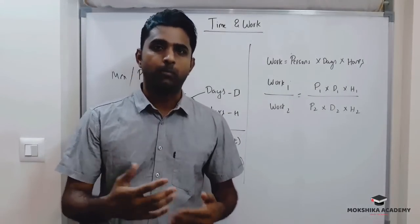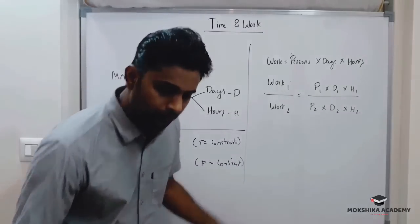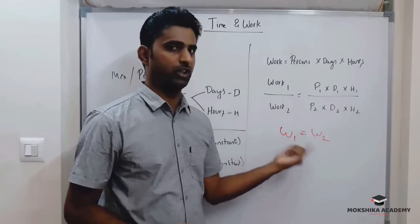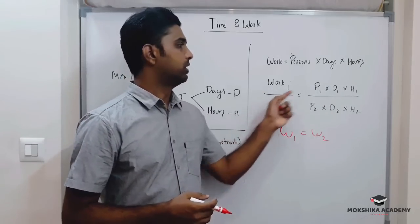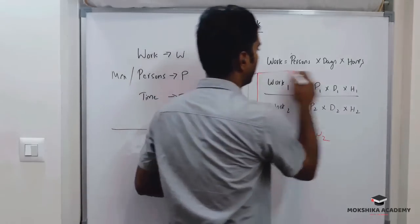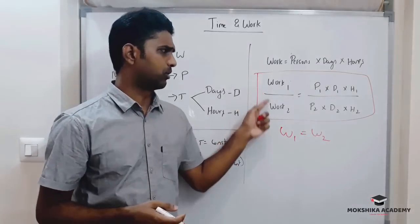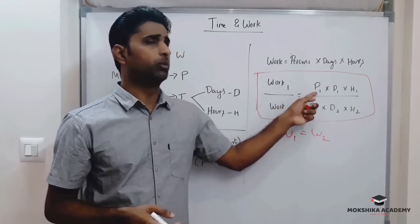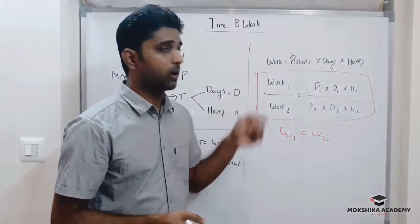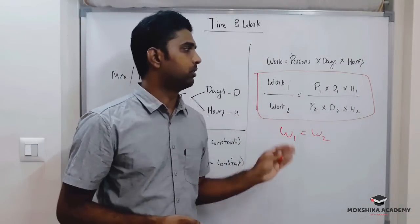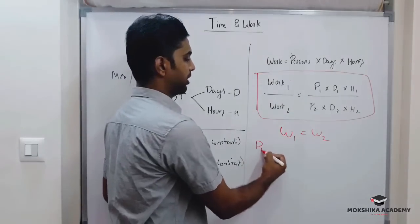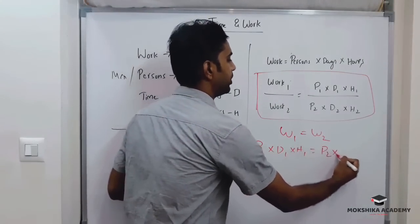If you have any problem, you should do comparisons: Work1 and Work2. Work1 is equal to Work2 — that is, A equals B, or A by B. Work1 is persons1 into day1 into hours1. Likewise we calculate Work2. The equation is: Work1 = P1 × D1 × H1 and Work2 = P2 × D2 × H2.